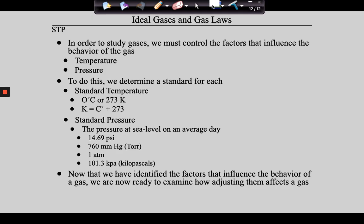From there we talked about the factors that influence the behaviors of gases. We need standards for those things: standard temperature and standard pressure, abbreviated STP. Standard temperature is zero degrees Celsius or 273 Kelvin. Standard pressure we will mostly express in millimeters of mercury and atm. With that said, gases are funky, funky systems.